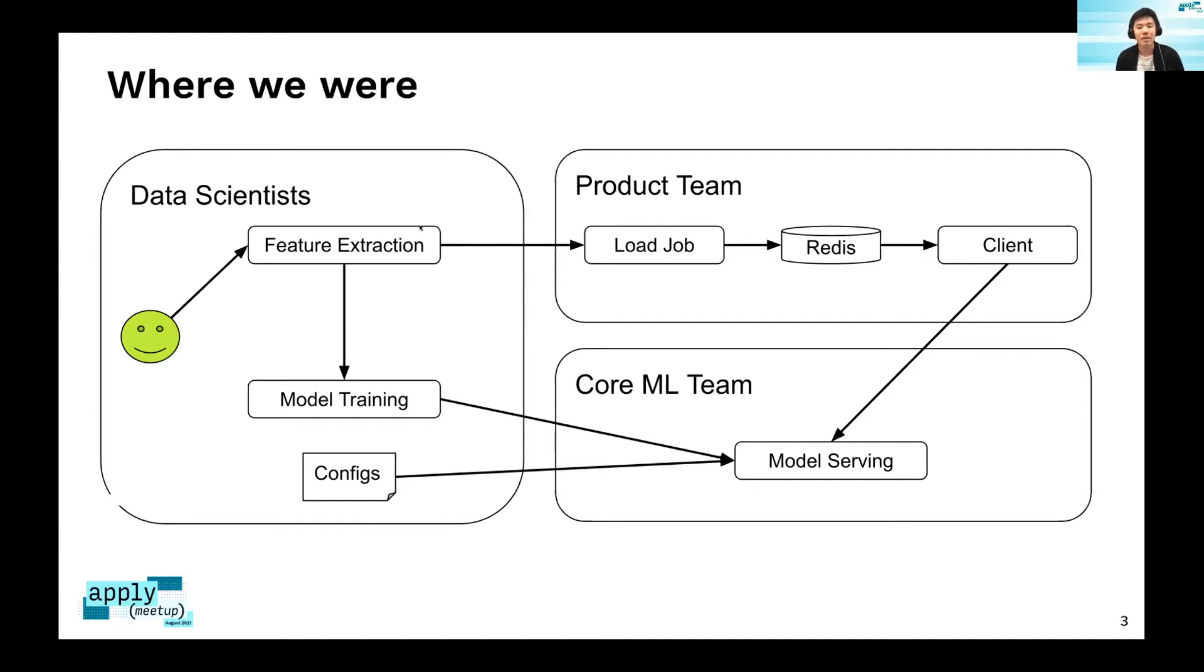Before the feature store project, the product team actually needed to write some kind of loading job. When data scientists extract the features they would put the feature in the hive table, and product team, which is mostly engineers, would write a Spark job to load the features into Redis. Then they would write client code because they are the owner of the server, and in the client they would concatenate both the features from Redis and some other additional ones that's not available, and send all of them to the model server. Our team actually owns the model serving infrastructure, which is the infra we built first.